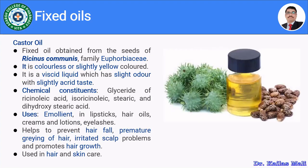Castor oil is a fixed oil obtained from the seeds of Ricinus communis, belonging to family Euphorbiaceae. It is colorless or slightly yellow, viscous in nature, with a slight odor and slightly acrid taste. Castor oil comprises glycerides of ricinoleic acid, iso-ricinoleic acid, stearic acid, and dihydroxystearic acid.